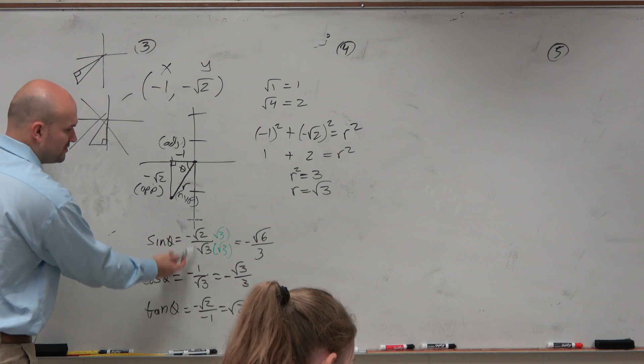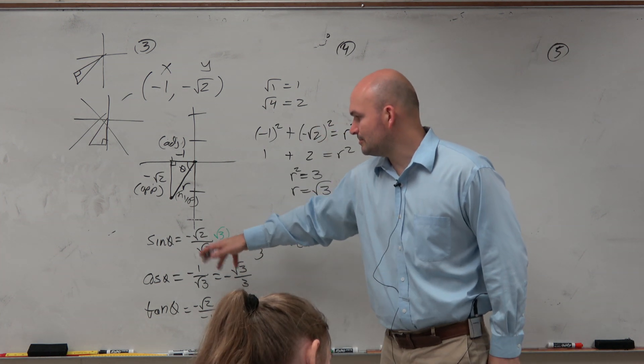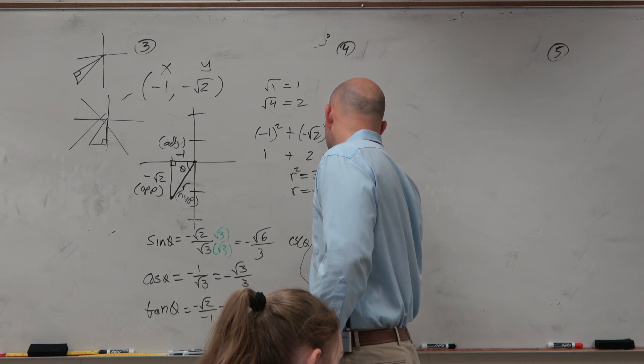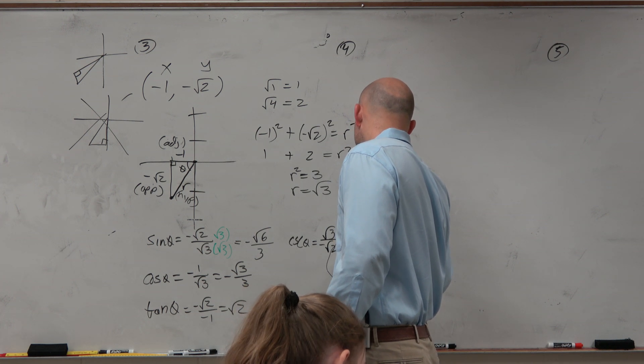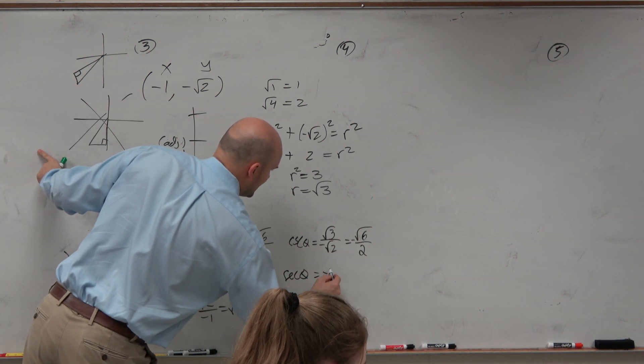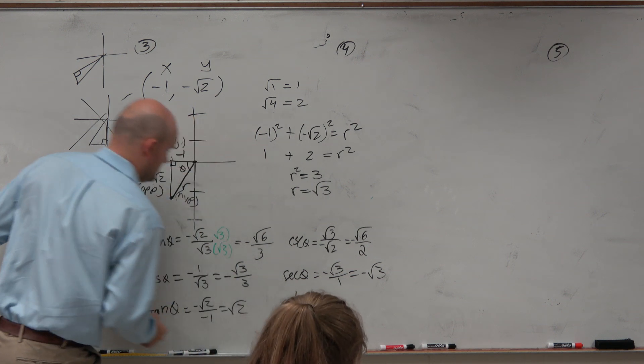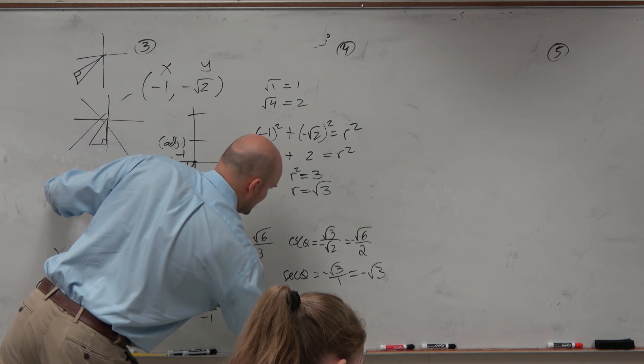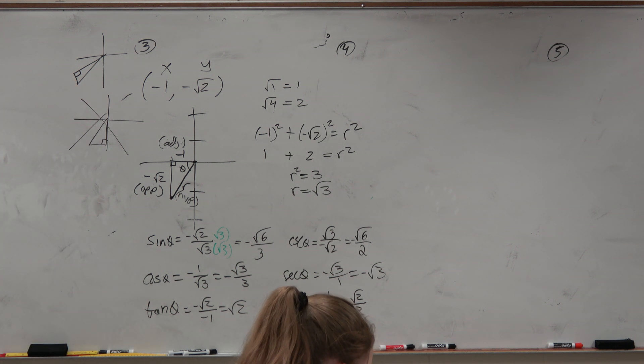Now we just move to the reciprocal functions, which is just basically the reciprocal of these. So cosecant is the reciprocal of sine. So I'm just going to reciprocate this. So it would be negative square root of 3 over square root of 2. Rationalize the denominator. You get negative square root of 6 over 2. The secant of theta is going to be the reciprocal of this, which would be negative square root of 3 over 1, which is just negative square root of 3. And then the cotangent of theta is the reciprocal over here. So that's going to be negative 1 over negative square root of 2. When you rationalize the denominator, you get square root of 2 over 2. Anybody have any questions on that?